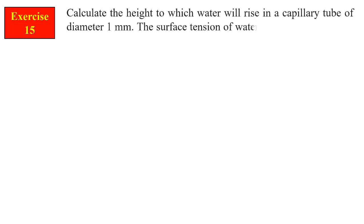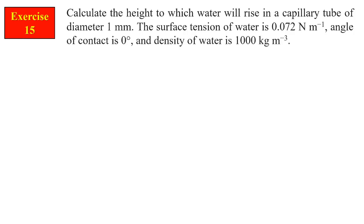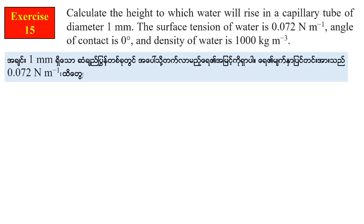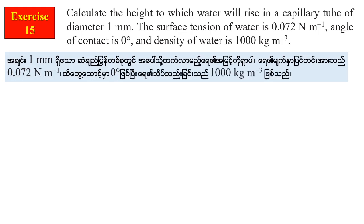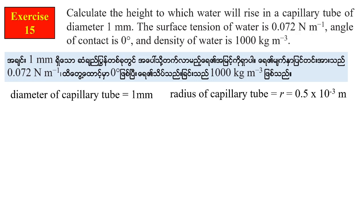Calculate the height to which water will rise in a capillary tube of diameter 1 mm. The surface tension of water is 0.072 Newton per meter. The angle of contact is 0 degrees and the density of water is 1000 kilogram per cubic meter. The radius of the capillary tube is 0.5 into 10 to the minus 3 meters.